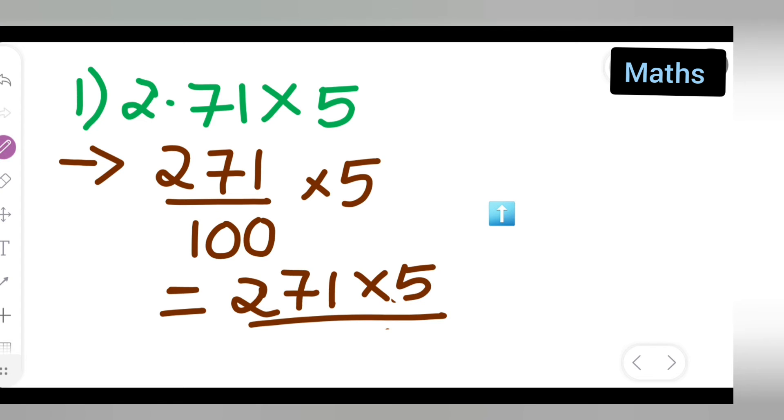Now 271 multiplied by 5: 5 ones are 5, 5 sevens are 35, 5 twos are 10 - so we get 1355. Write down 1355 upon 100.